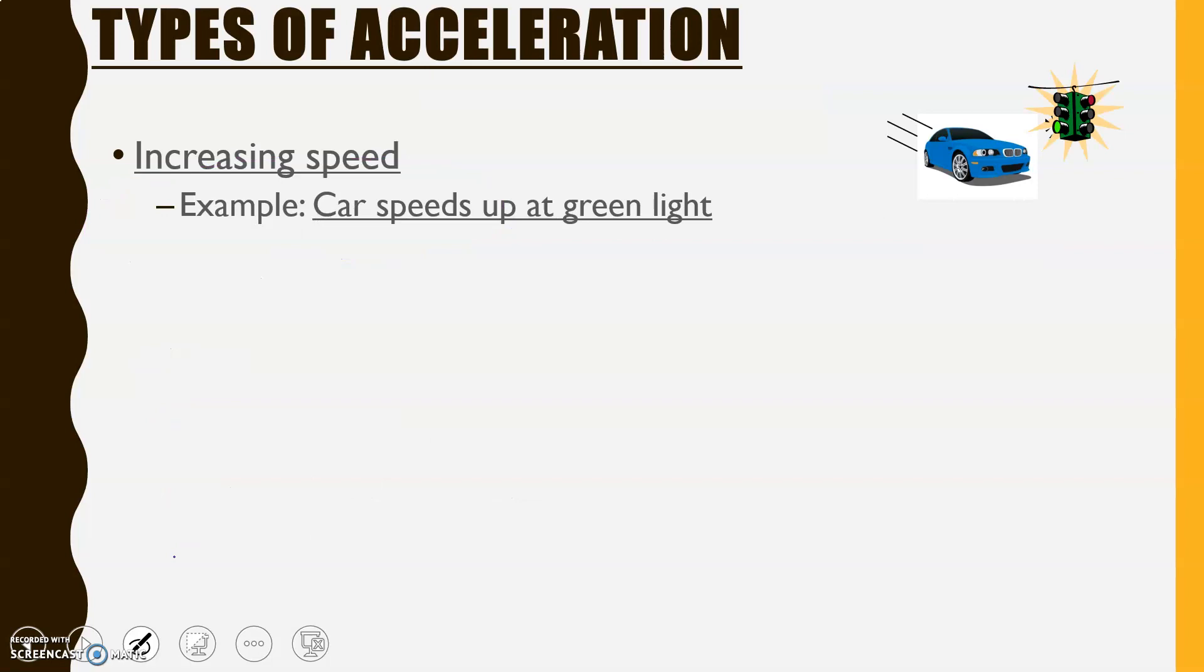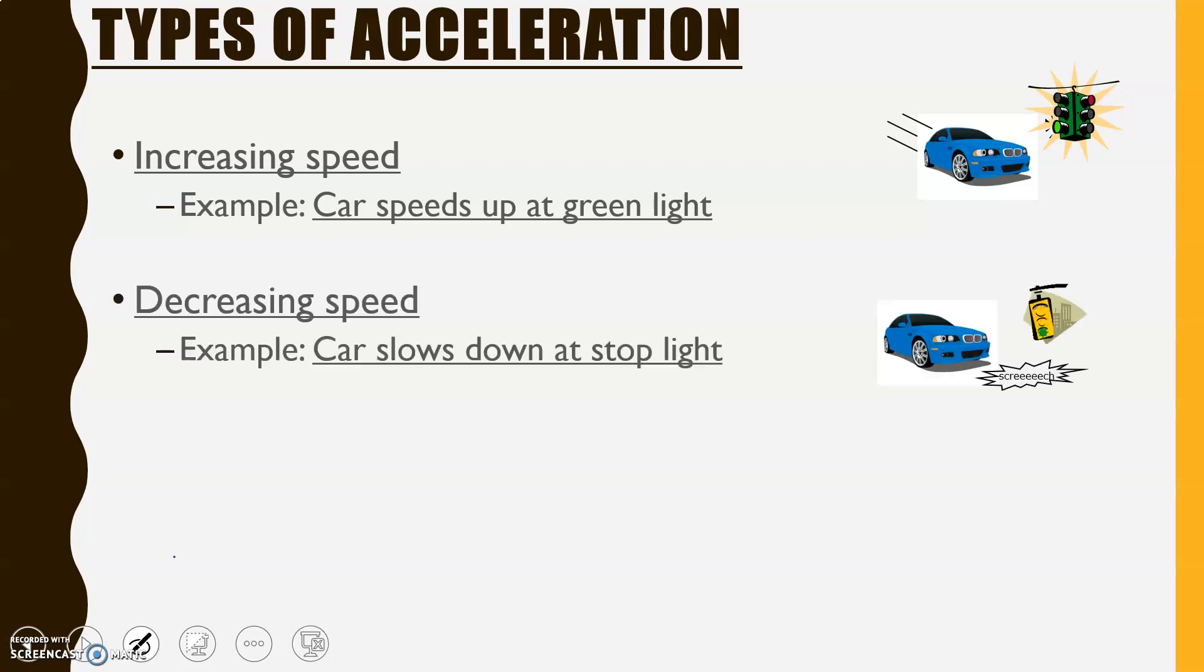So when we're talking about increasing speed, examples could commonly be something speeding up. So a car speeds up at a green light. When we're talking about decreasing speed, maybe the car is slowing down at a stoplight.